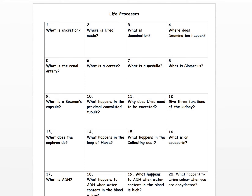Number one: controlling the amount of water content in the blood — that's osmoregulation. Number two: controlling the amount of salts in the blood. Number three: removal of wastes from the blood, such as urea. Number four: the reabsorption of critical materials, such as glucose and amino acids. There are more.